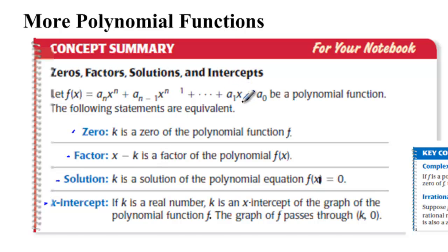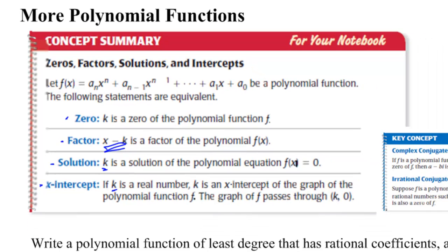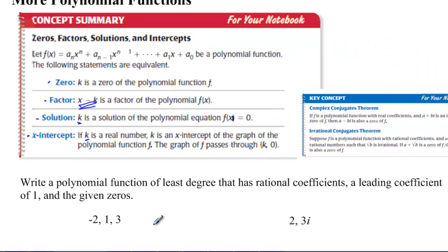We talked about this a little while ago but just to review, if we have a polynomial and k is a zero of that polynomial, x minus k is a factor, k is a solution, and k is also an x-intercept on the graph. Now, we've talked about this in terms of finding the zeros and finding the factors, but let's start with the zeros and the factors and then get into the polynomial.